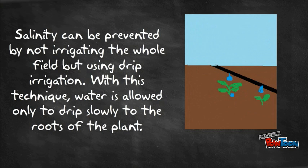Salinity can be prevented by not irrigating the whole field but using drip irrigation. With this technique, water is allowed only to drip slowly to the roots of the plant.